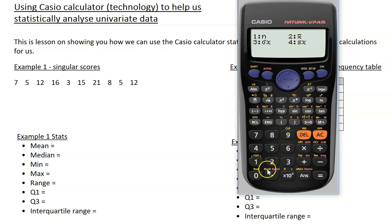Because we want to find the mean, we'll simply select 2 and then press equals, giving us a mean of 10.4.